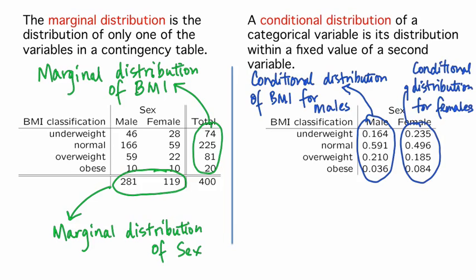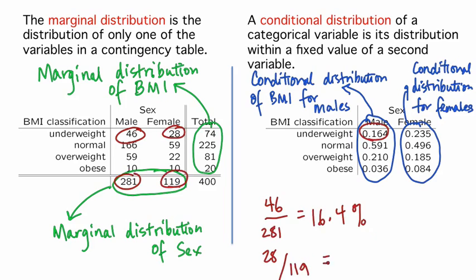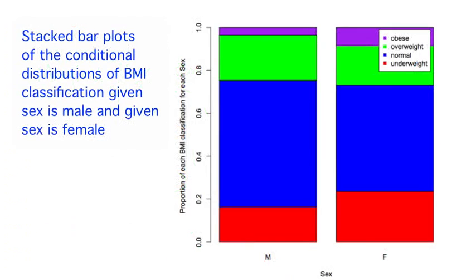The relevant quantity for the conditional distribution, calculated from the contingency table of counts, is the column percentage — that is, the percentage that each count is of the total number of observations in each column, found using the marginal column totals. Note that for both males and females, the conditional distribution proportions sum to one. Graphically, we can compare the conditional distributions of BMI classification given sex by plotting the column percentages in stacked bar plots, which shows that the proportions of underweight and obese skeletons are higher in females than males, while the proportion of normal weight skeletons is higher for males.